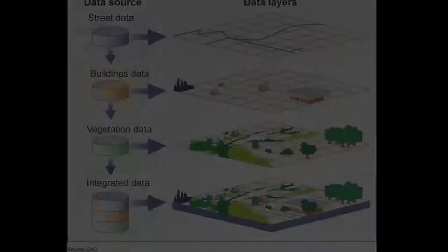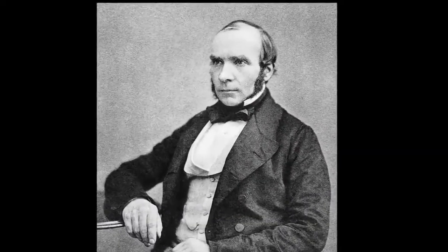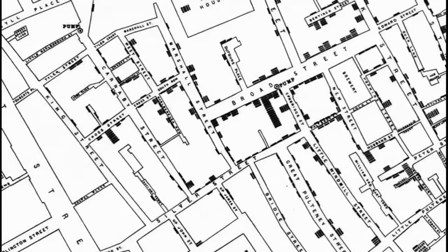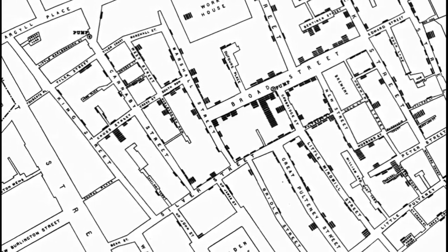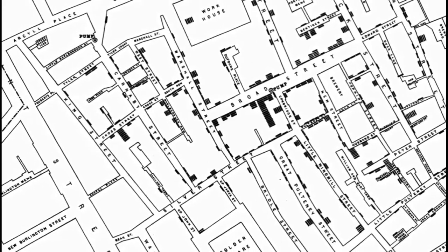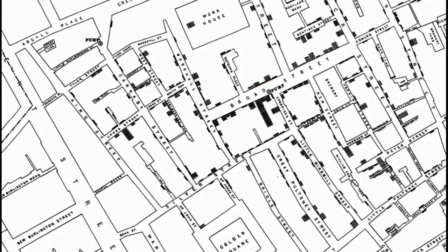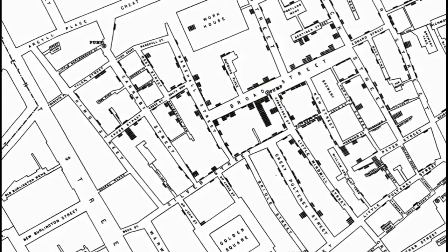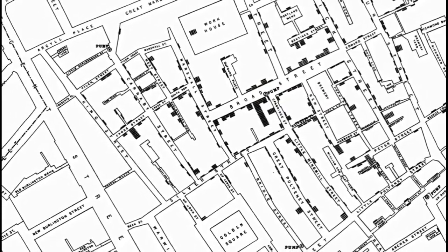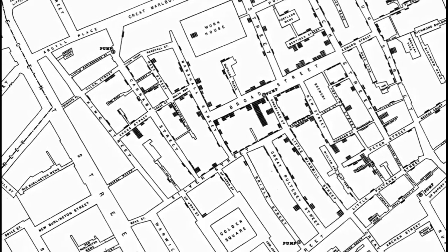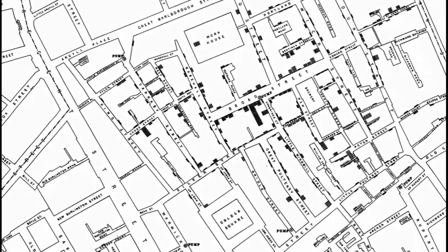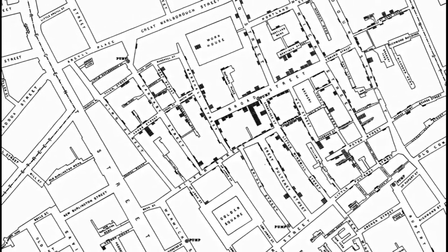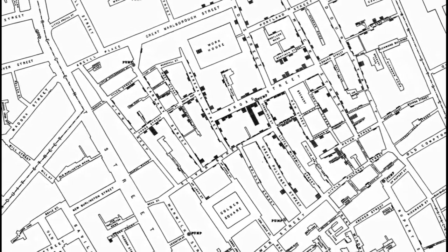A physician named John Snow in 1854 decided to map the victims of cholera. He created a map representing the places where the victims lived, then overlaid that map with a map containing the water source locations. He noticed a special connection between the places where cholera victims lived and the water source locations, and found out that cholera was caused by contaminated water. This was one of the first uses of GIS.